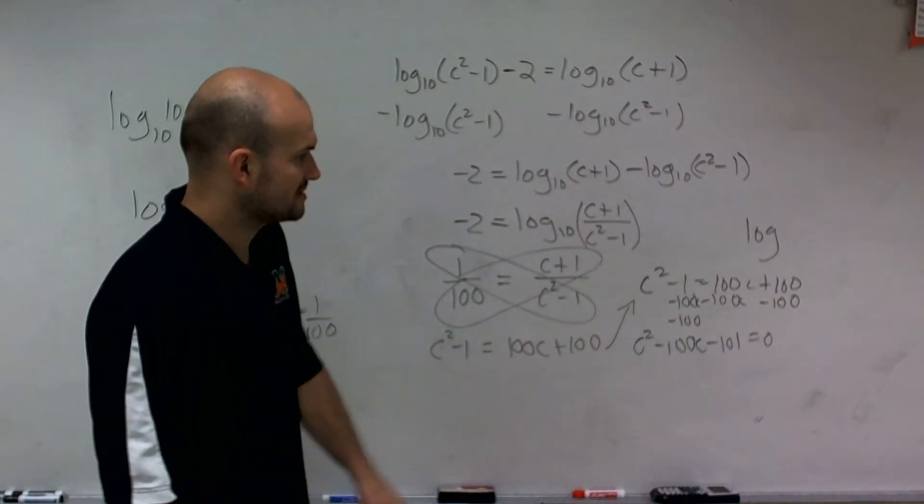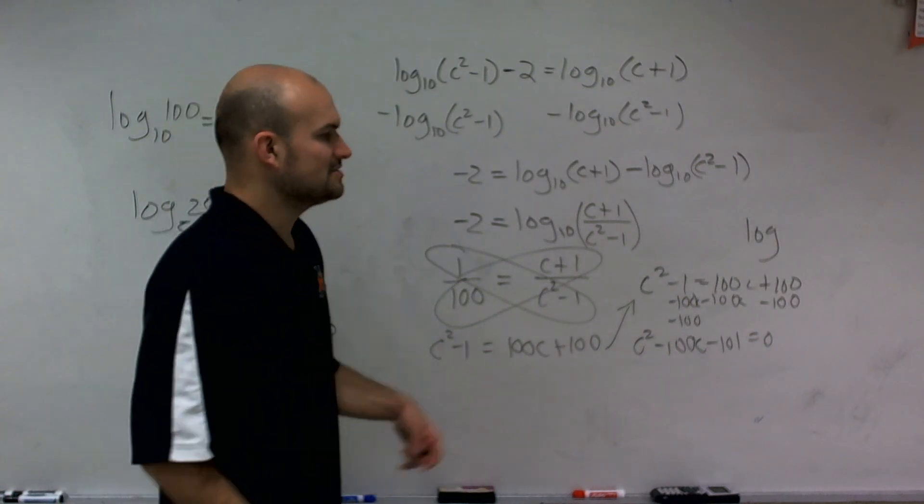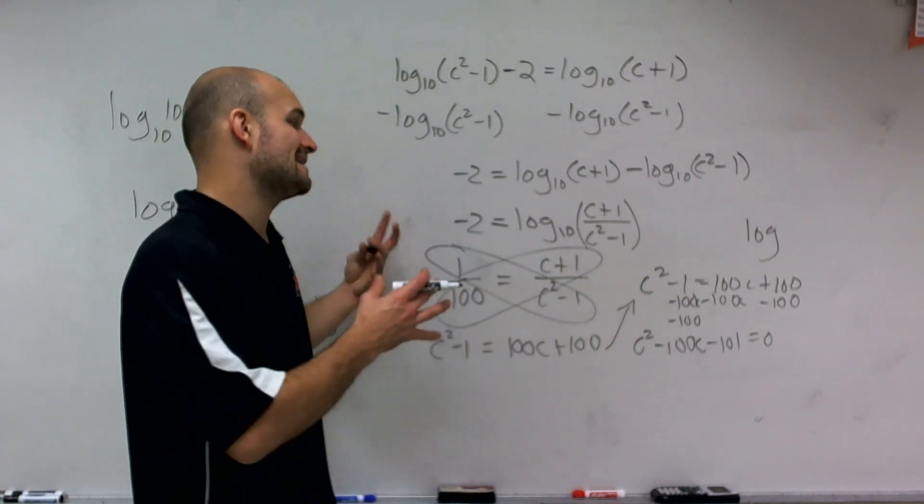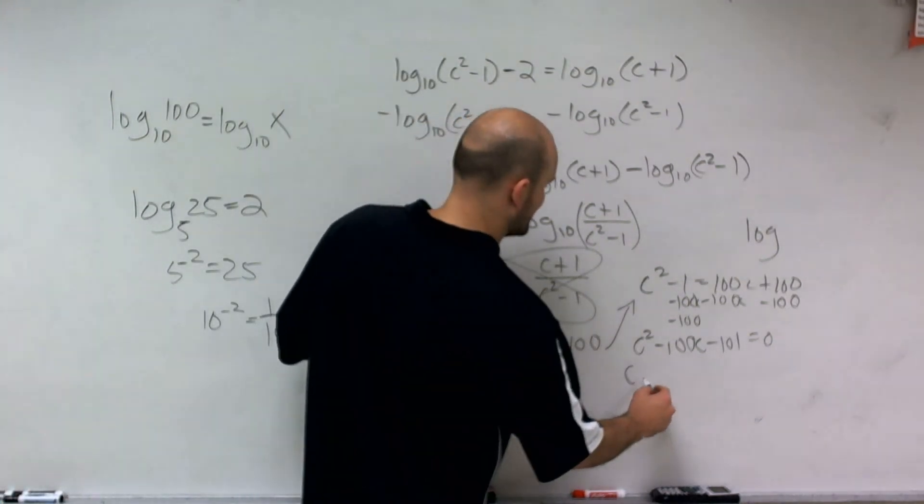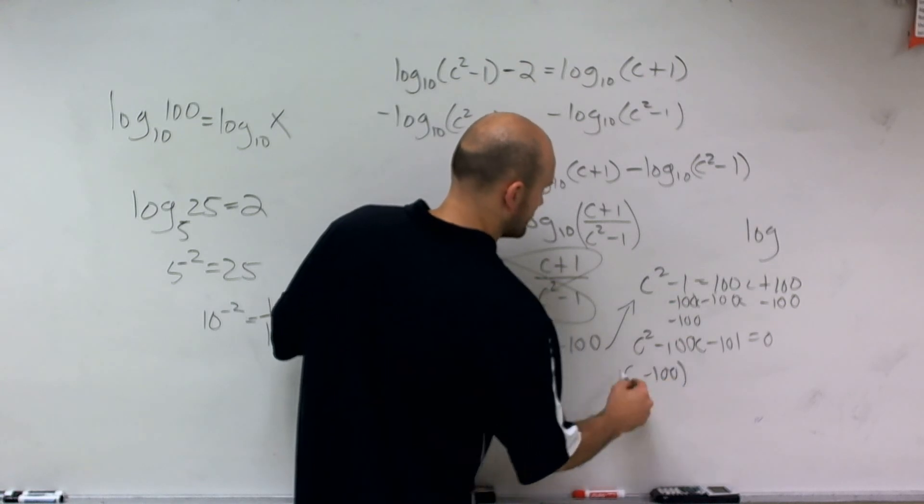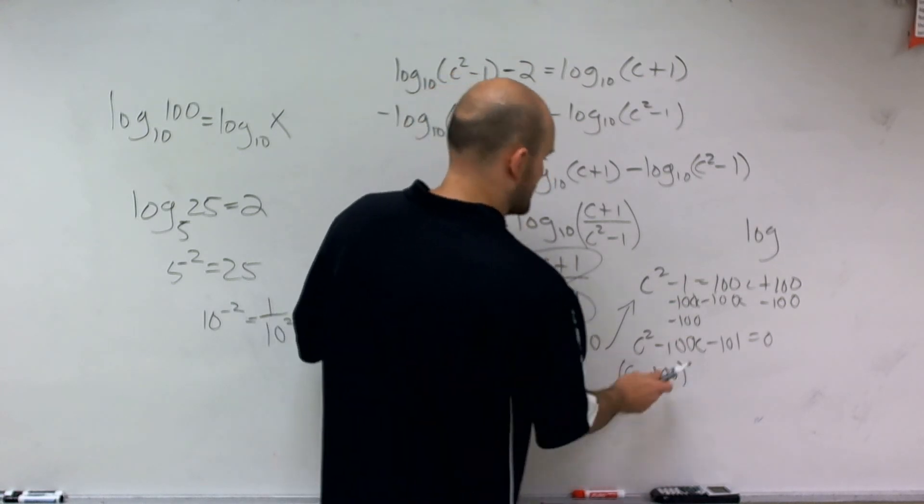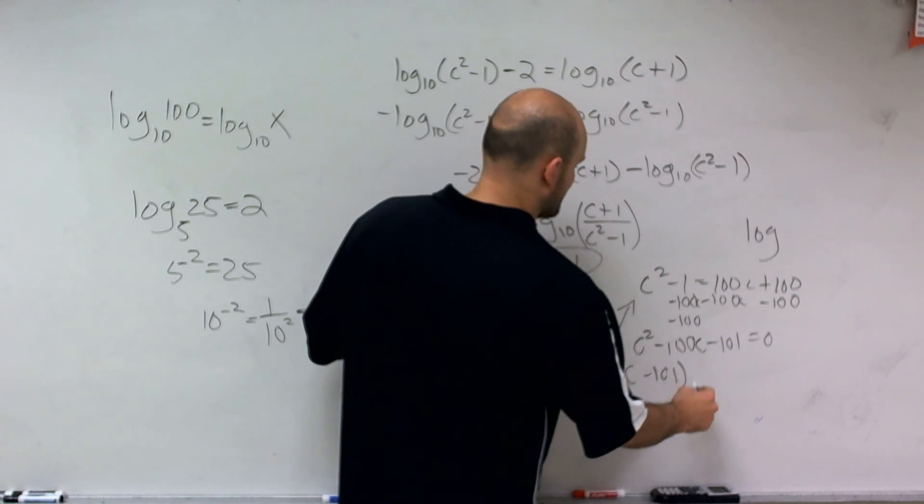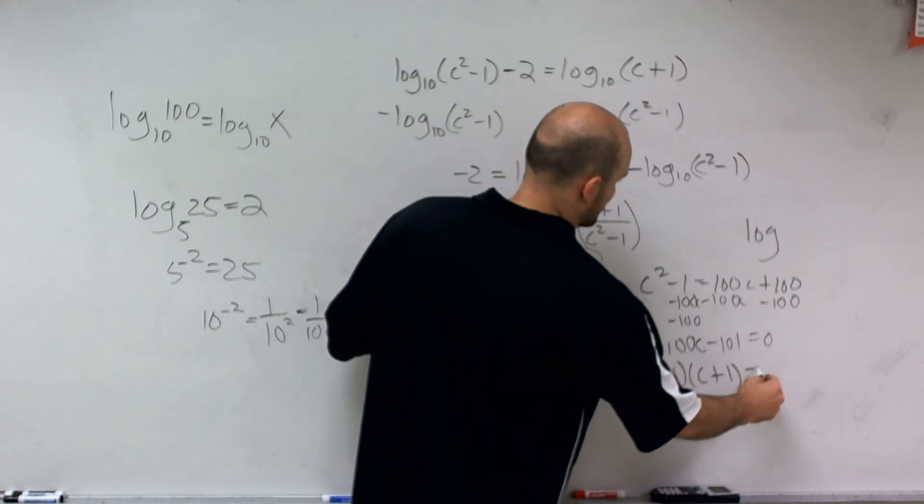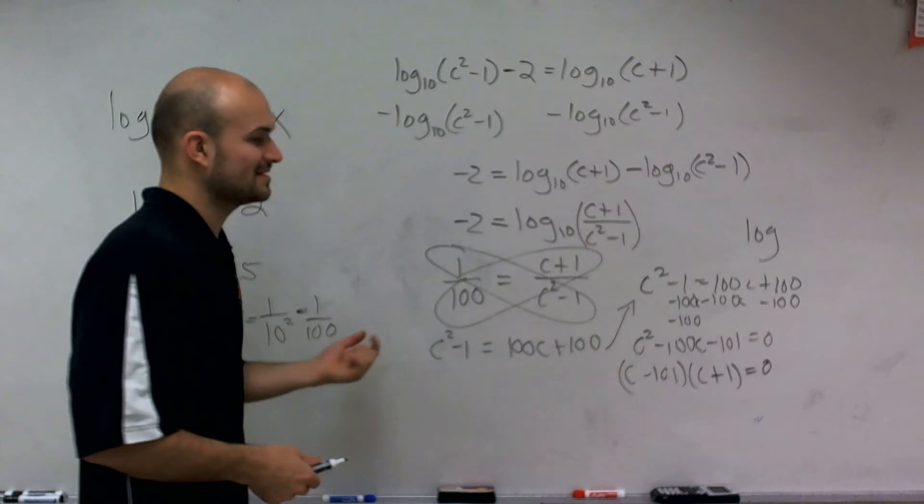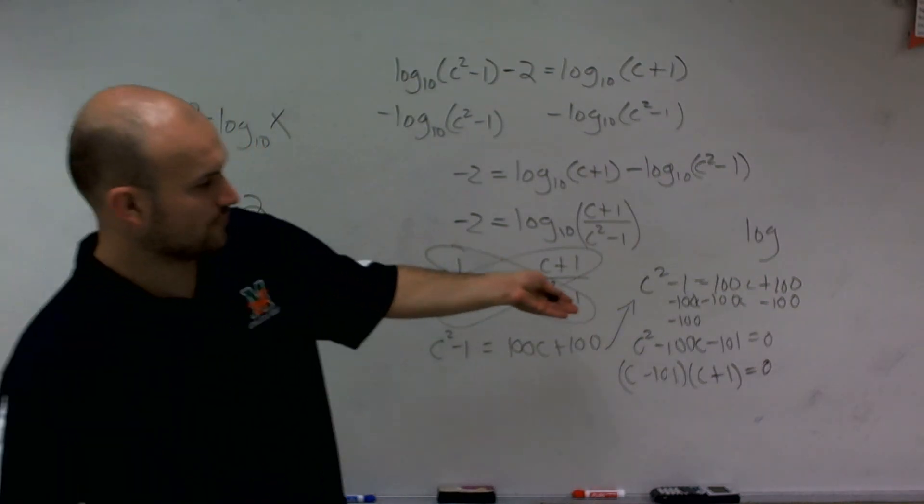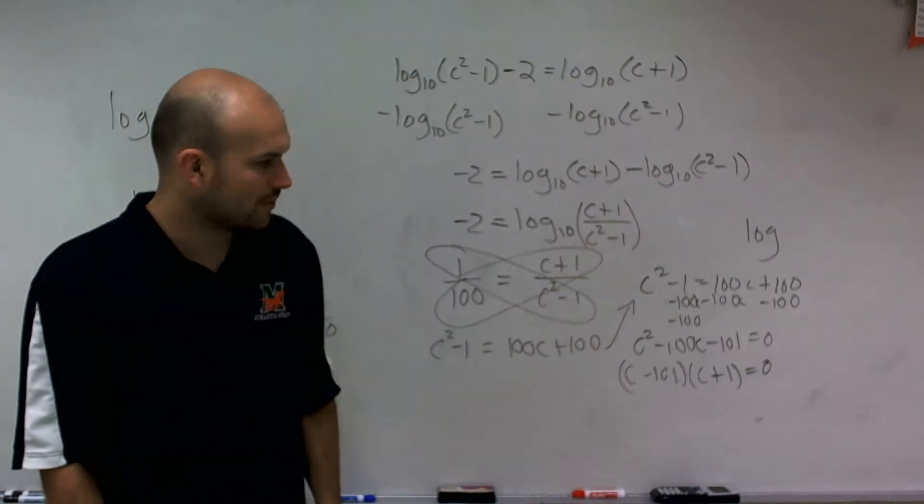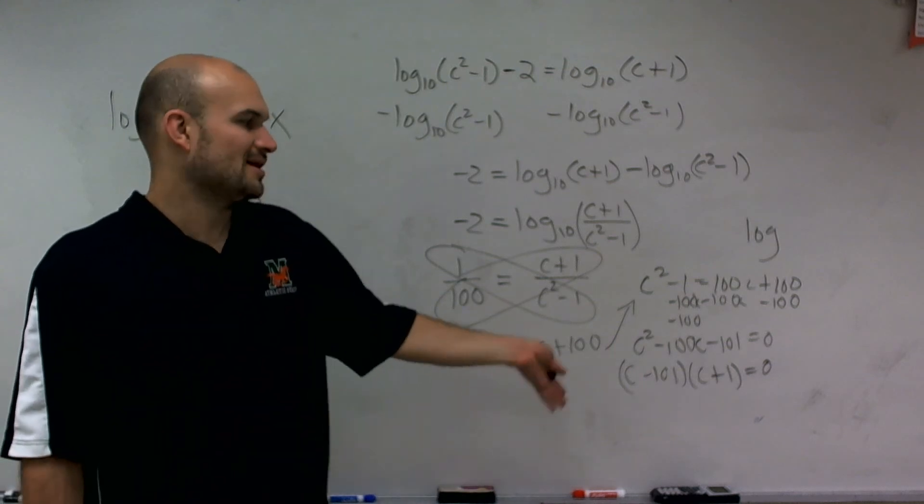Yes, because that's a 1, not 1c. So now, what two numbers multiply to give me negative 101 but add to give me negative 100? Well, I can say c minus 101 times c plus 1 equals 0, because negative 101 times 1 is negative 101, and negative 101 plus 1 is negative 100.